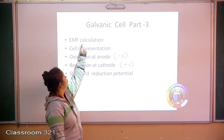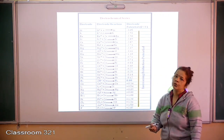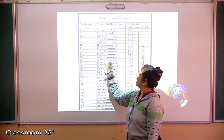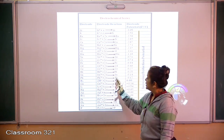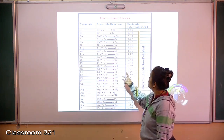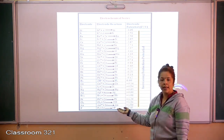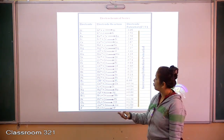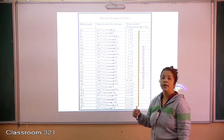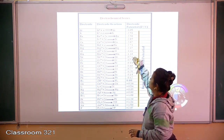This is the table that we use to calculate the EMF value. This table gives us the values of the potential, and this clearly shows addition of electrons which is reduction. A positive value means reduction happens; a negative value means reduction is resisted. So if you are looking for an element to act as the cathode where reduction has to happen, you look for those with positive values, while elements with negative reduction potential values are chosen to act as the anode.